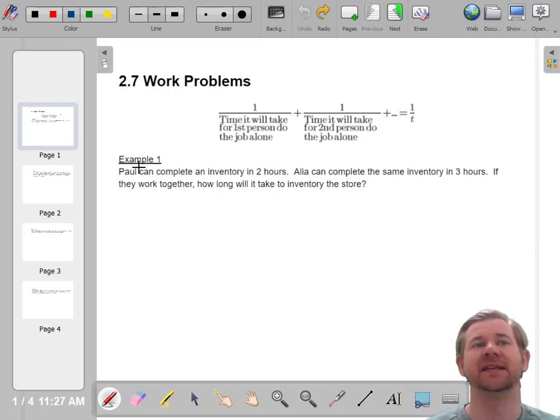So the first one says Paul can do it in two hours, one over two, and Aliyah can do it in three hours, so that would be one over three, and together they can do it in six hours. Actually we don't know, one over x. How long will it take if they work together?